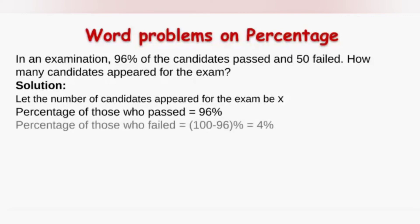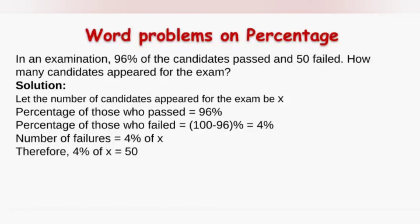The percentage of those who passed is 96 percent, so the percentage of those who failed will be 100 minus 96, which is 4 percent. Now it is given that 50 students failed, so 4 percent of x is equal to 50. The number of failures is nothing but 4 percent of x, which equals 50 candidates.